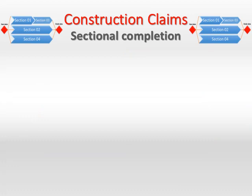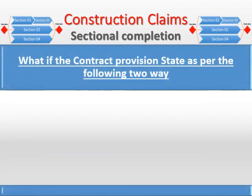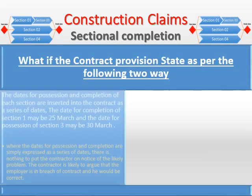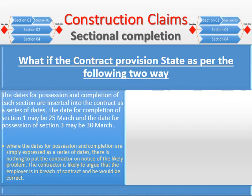What if the contract provisions state as per the following two cases? In the first case, the contract provisions state that the dates for possession and completion of each section are inserted into the contract as a series of dates — for example, the date for completion of section one may be 25th March and the date for possession of section three may be 30th March.